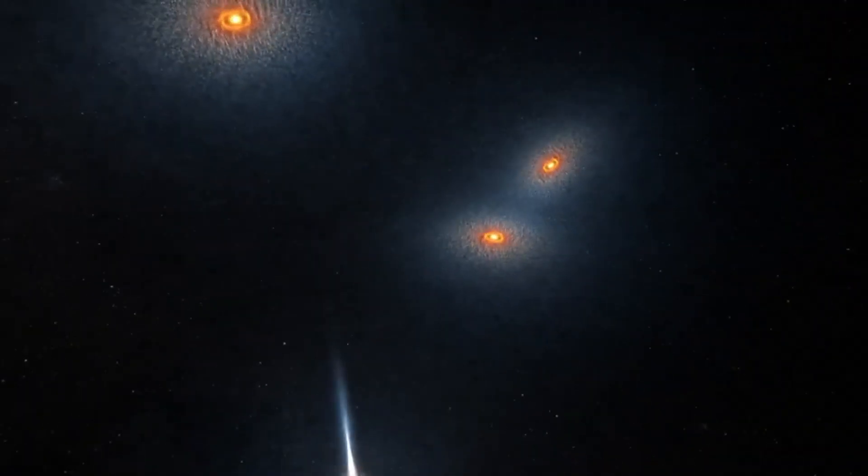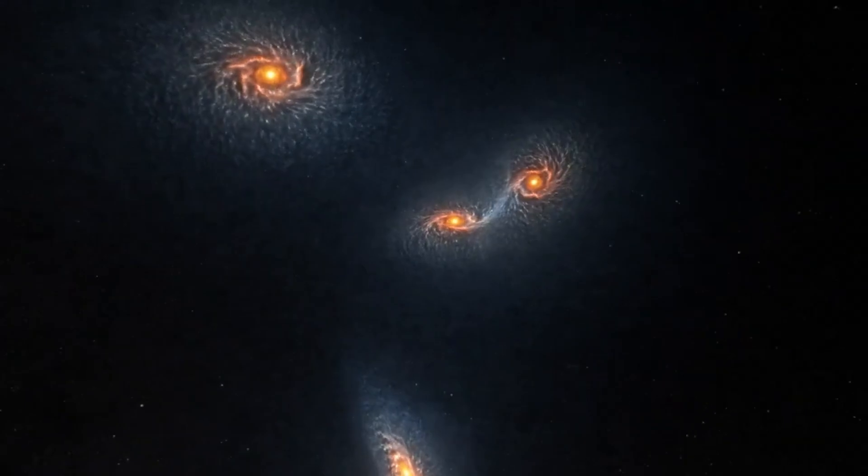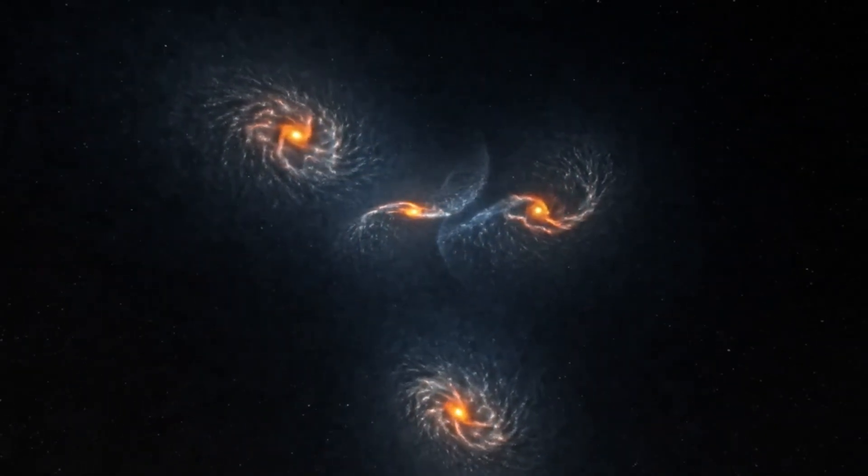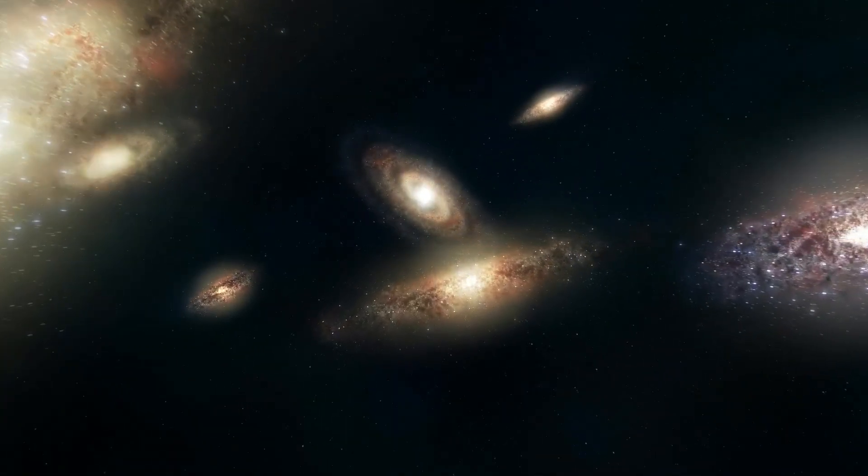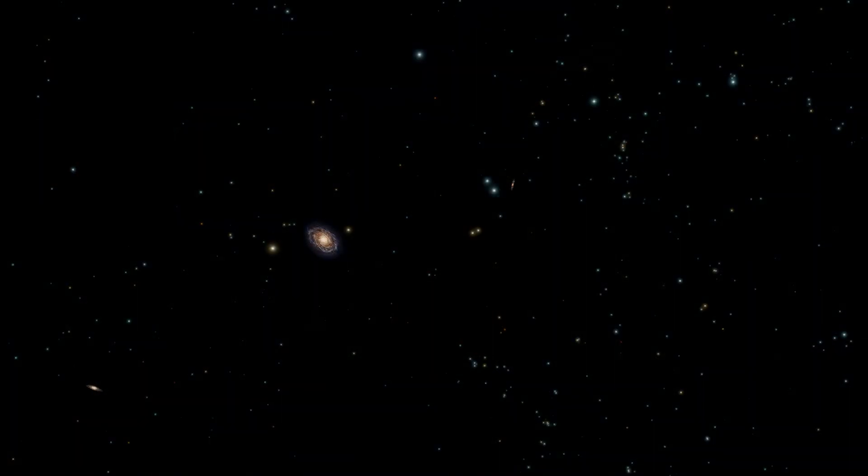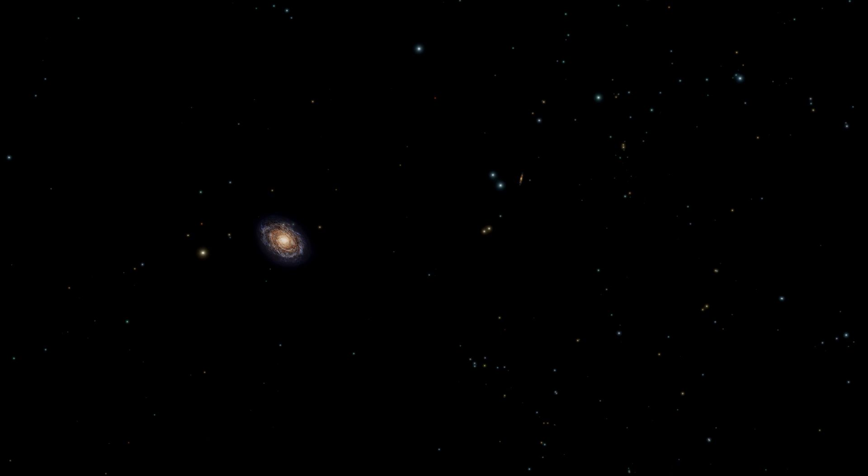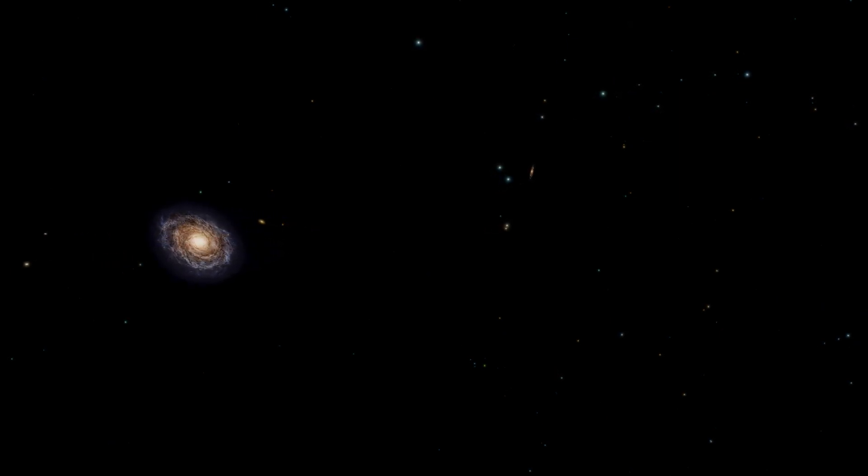Although galaxies, including the Milky Way and Andromeda, will collide and merge within the local group over tens of billions of years, the local group itself will never merge with other galaxy clusters. The universe is like an ocean where individual galaxy groups are akin to islands, constantly drifting away from each other in the vast cosmic sea.